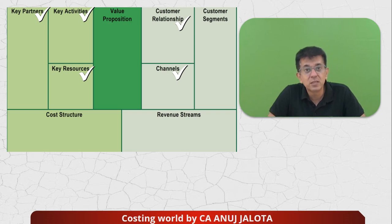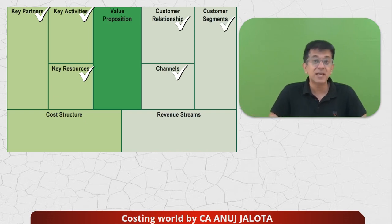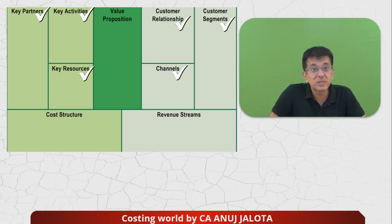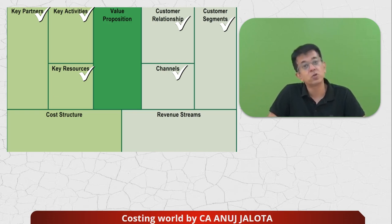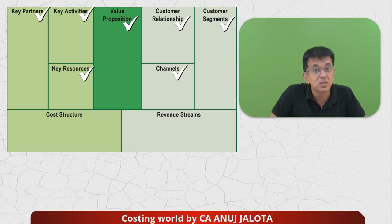On the right-hand side, channels describe how you're going to sell — through wholesalers, retailers, or directly to the public through your website. Customer segments define the profile of customers you're selling to. Below, you have revenue streams and cost structures — subtract both and that gives you the profit formula.